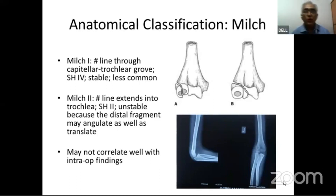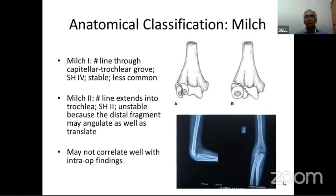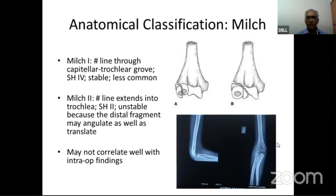The oldest classification for lateral condylar fracture was given by Milch. It is an anatomical classification divided into two types. Type 1 fracture is where the fracture line crosses lateral to the trochlea, can cross through the capitellar epiphysis, and on X-ray appears like a flake of bone laterally. This fracture is inherently stable and is a Salter-Harris Type 4 fracture. It is less common.